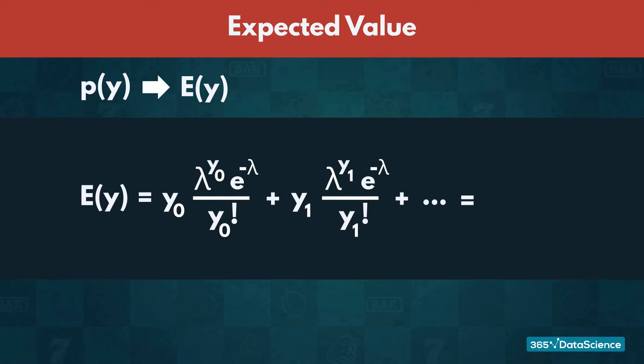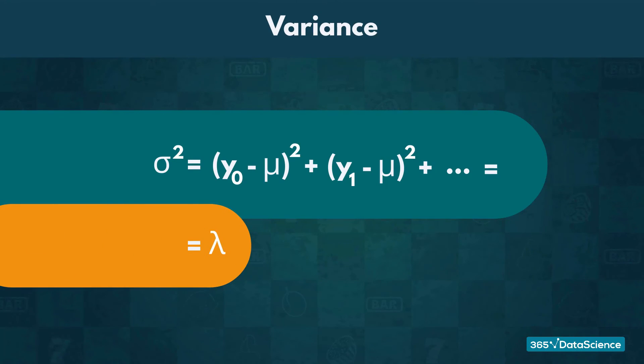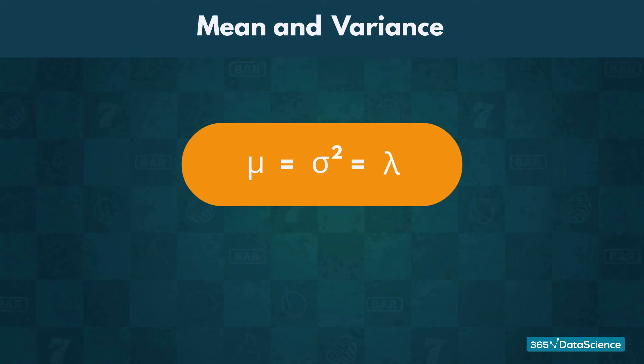Similarly, by applying the formulas we already know, the variance also ends up being equal to lambda. Both the mean and the variance being equal to lambda serve as yet another example of the elegant statistics these distributions possess, and why we can take advantage of them.